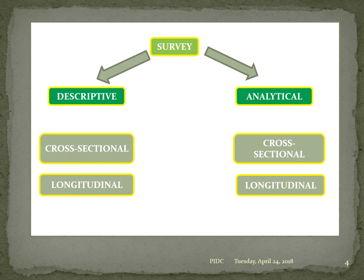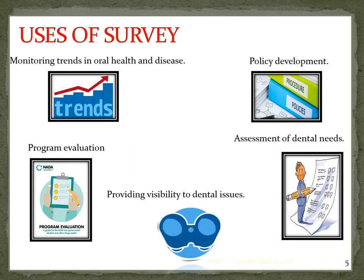The types of surveys are descriptive and analytical. Under descriptive there are two types: cross-sectional and longitudinal. Under analytical, also cross-sectional and longitudinal. The difference is that descriptive gives only description like age, gender, location, time, and place. Analytical has a hypothesis that we have to prove, accept, or reject.